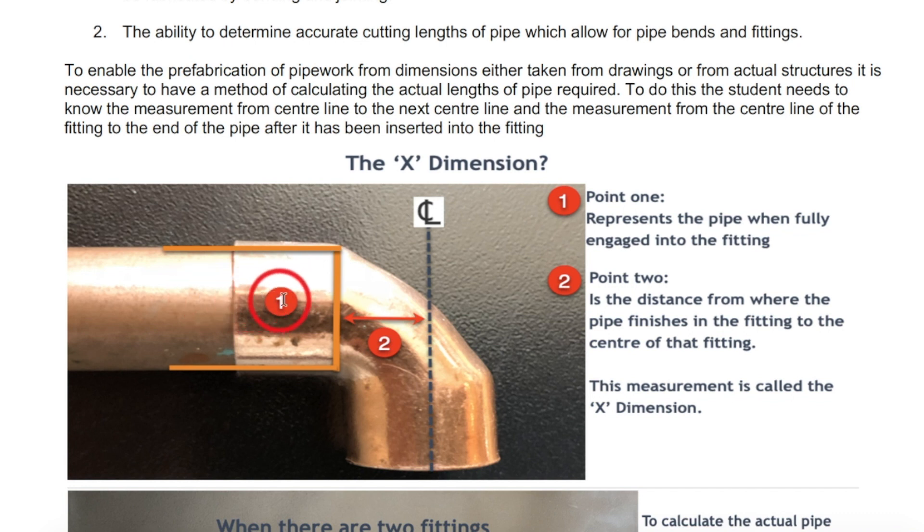It's the distance between where the pipe finishes in the fitting to the center of that fitting. Point one represents the pipe fully engaged, completely fitted. Point two is the distance from where the pipe finishes in the fitting to the center of that fitting itself.